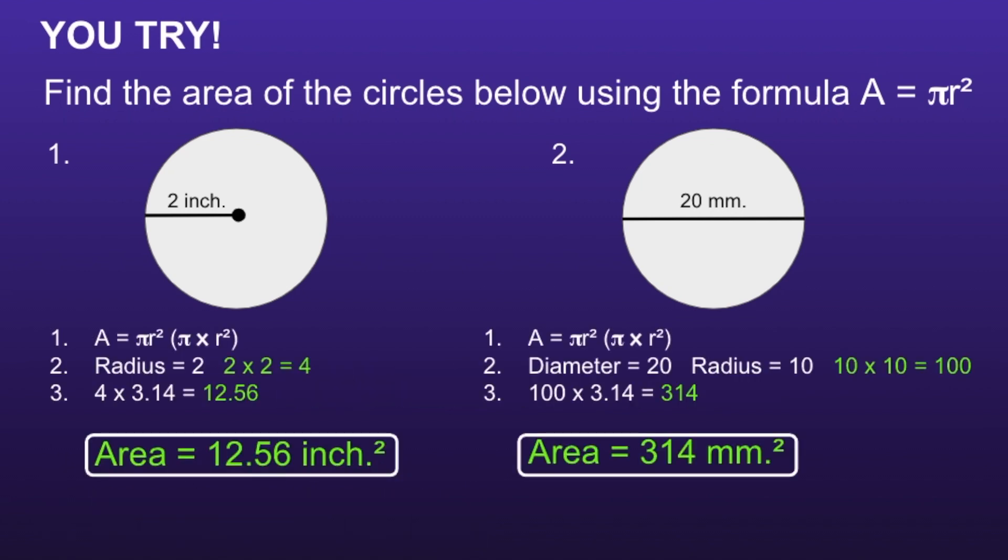Alright, let's take a look. The area for circle number one is 12.56 inches squared. And the area for circle two is 314 millimeters squared. If you had either of these incorrect, I would recommend you pause, review your work, and see if you can determine your mistake.